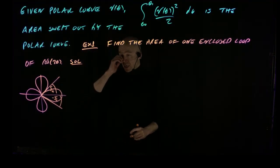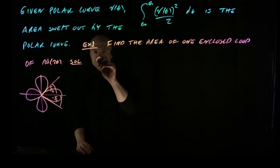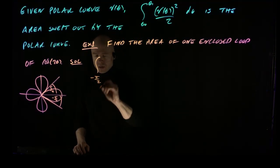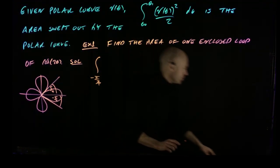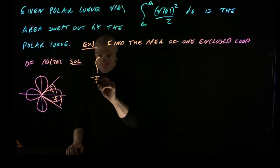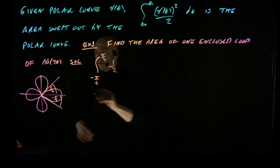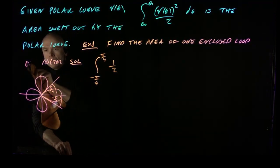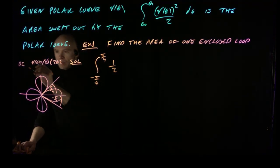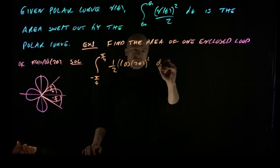To get just one loop, it's enough to integrate over the range of angles from −π/4 to π/4. We have the formula and just have to apply it. Once we're confident it's the right formula, it is just a calculation. So we put in the correct limits and integrate (1/2) times cos²(2θ) dθ.